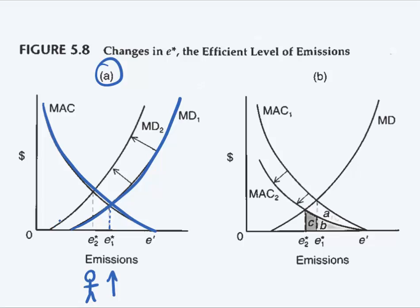Meaning the marginal damage cost curve will shift up. So this just shifted up to MD2. Now my equilibrium changed as well and I'm not at E star 1 anymore. I'm now at E star 2.